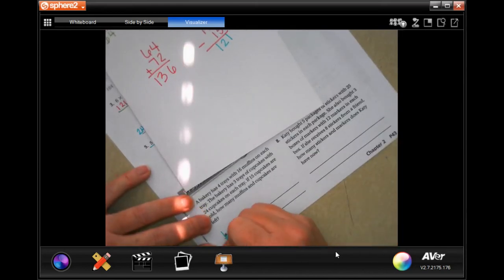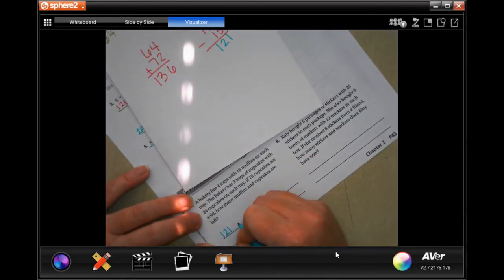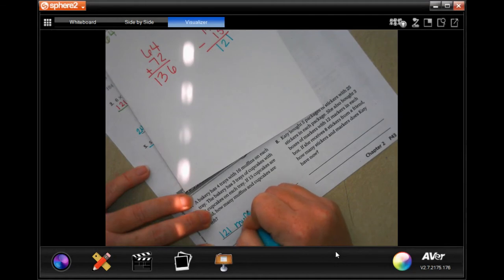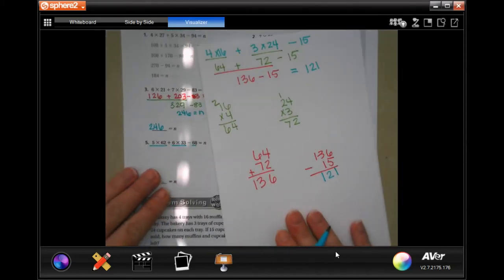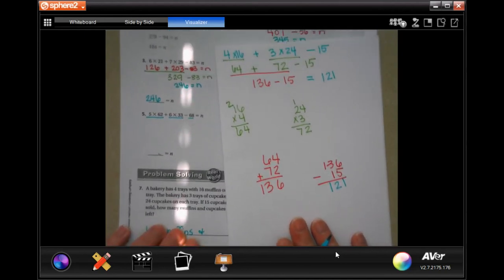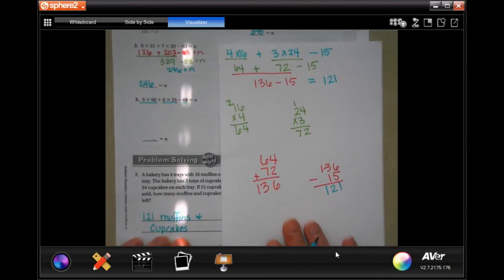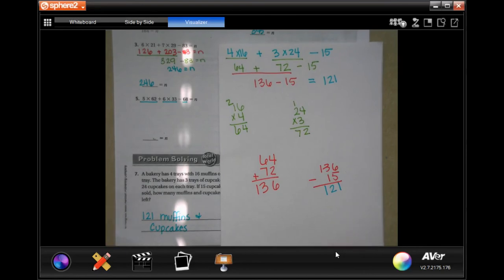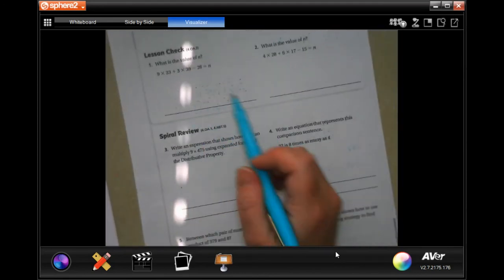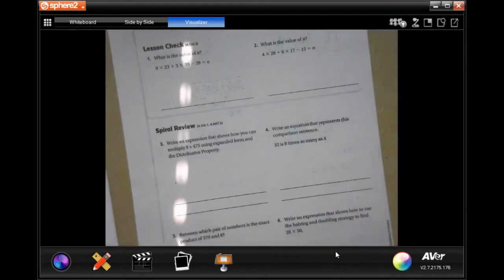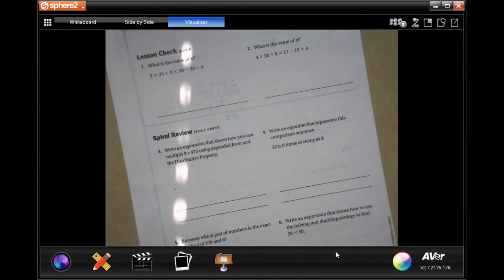So 121 muffins and cupcakes. Pause it, write down your work, do whatever it is that you need to do to make that happen. Show your work. So number 8, you guys do. You totally can. Lesson check on the back, number 1 and 2. You guys do those. You totally can.